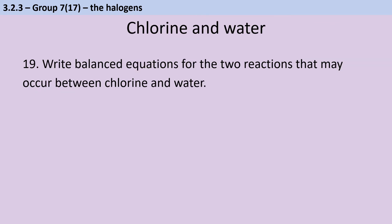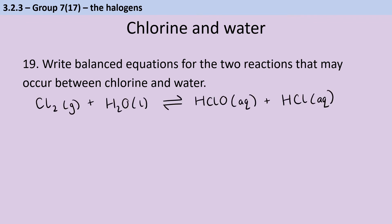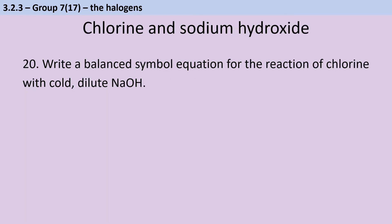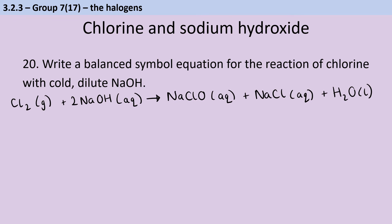There are two sets of equations for the reactions between chlorine and water. Firstly, chlorine reacts with water to form hydrogen chlorate and hydrogen chloride. But if this reaction happens in sunlight, instead we get two chlorines and two waters reacting to form four lots of hydrogen chloride and also oxygen gas. When chlorine reacts with cold dilute sodium hydroxide, it forms sodium chlorate — the oxidizing agent found in bleach — and also sodium chloride and water.